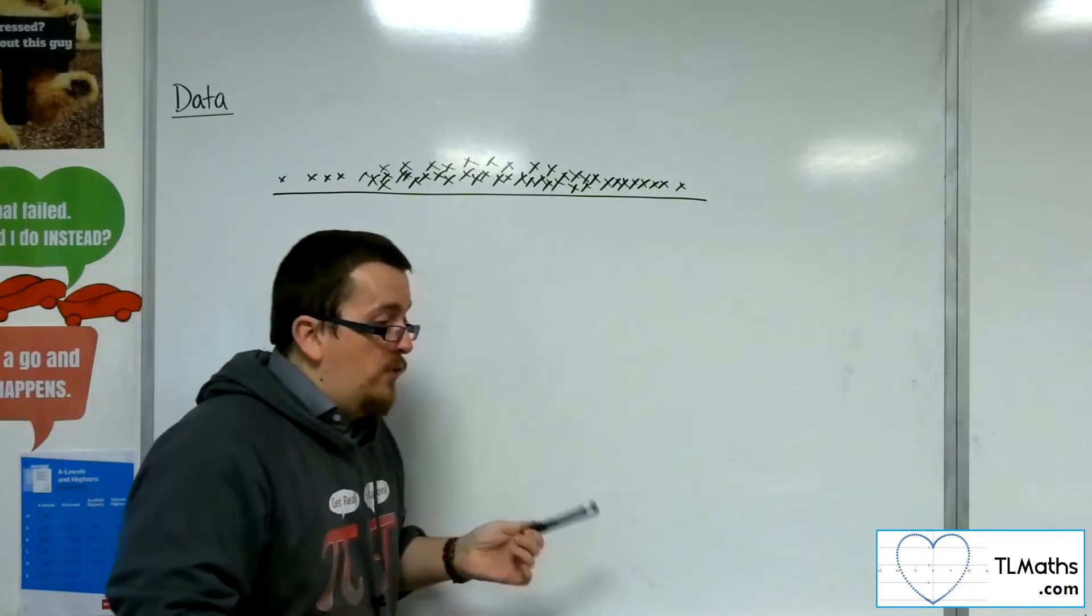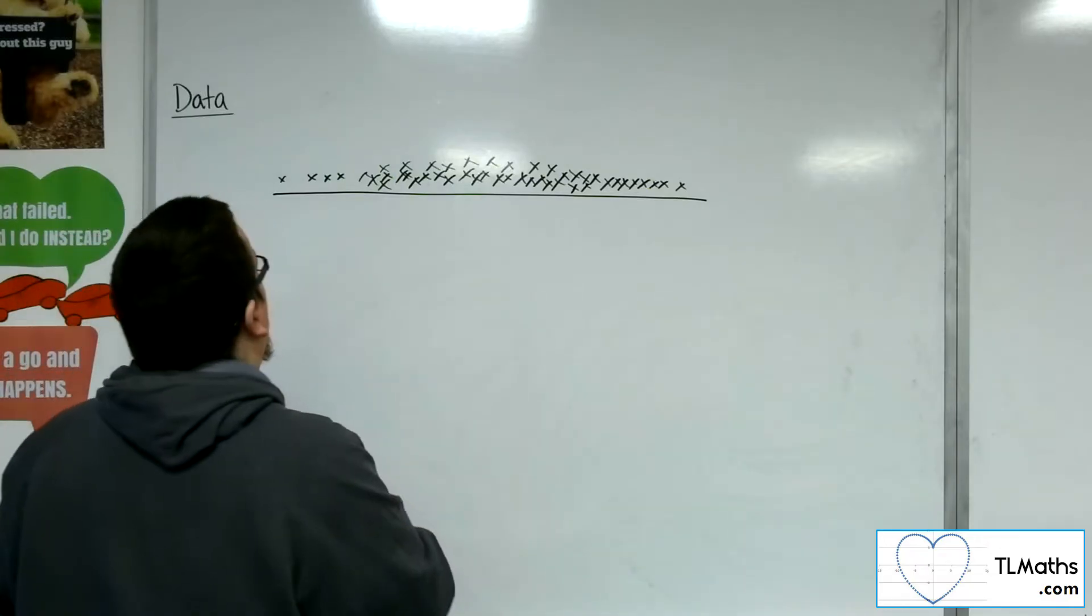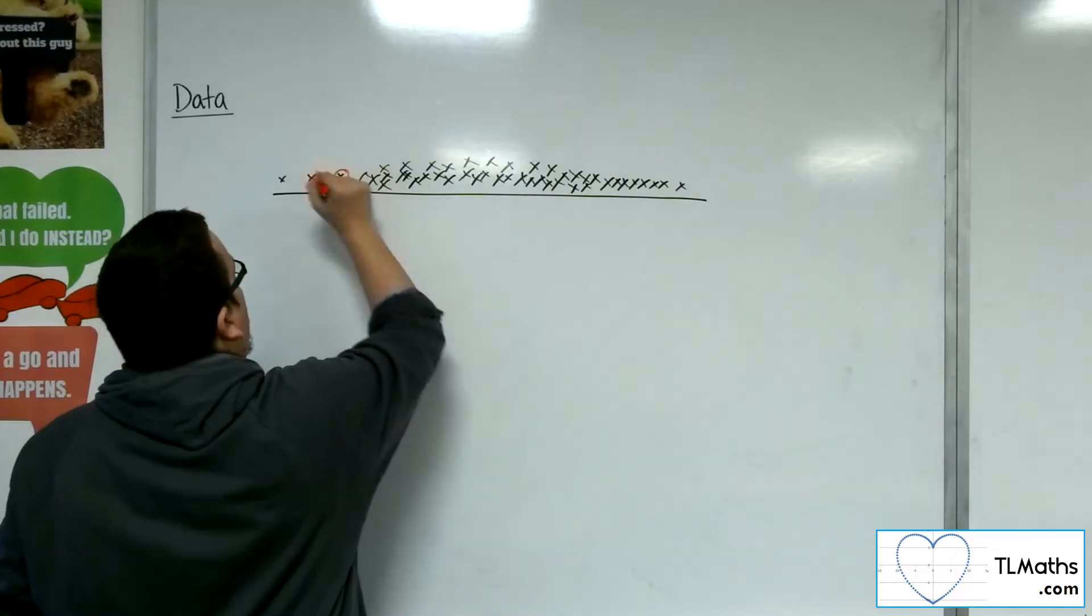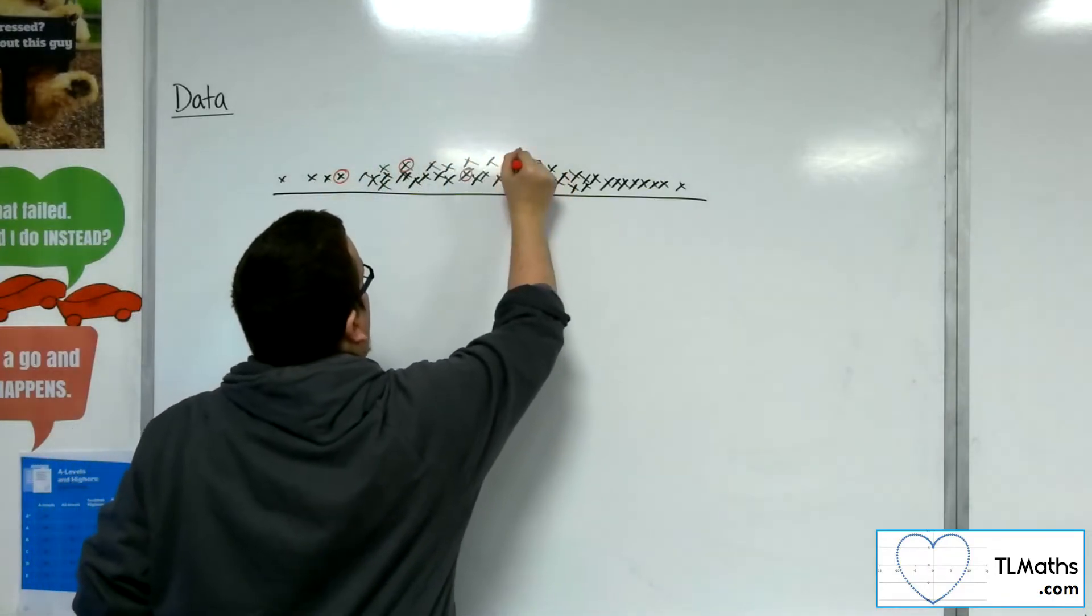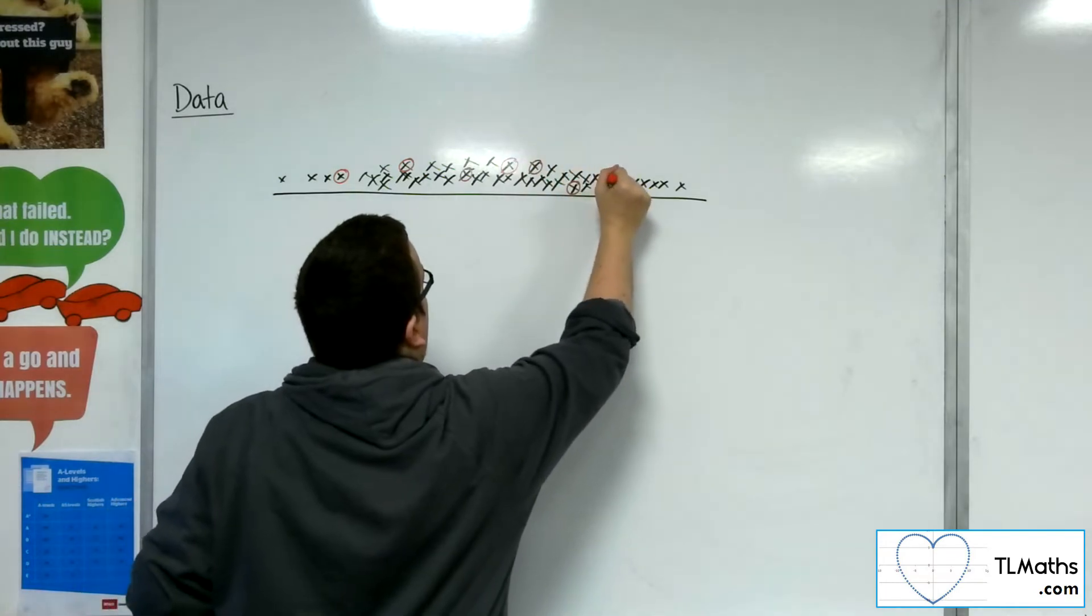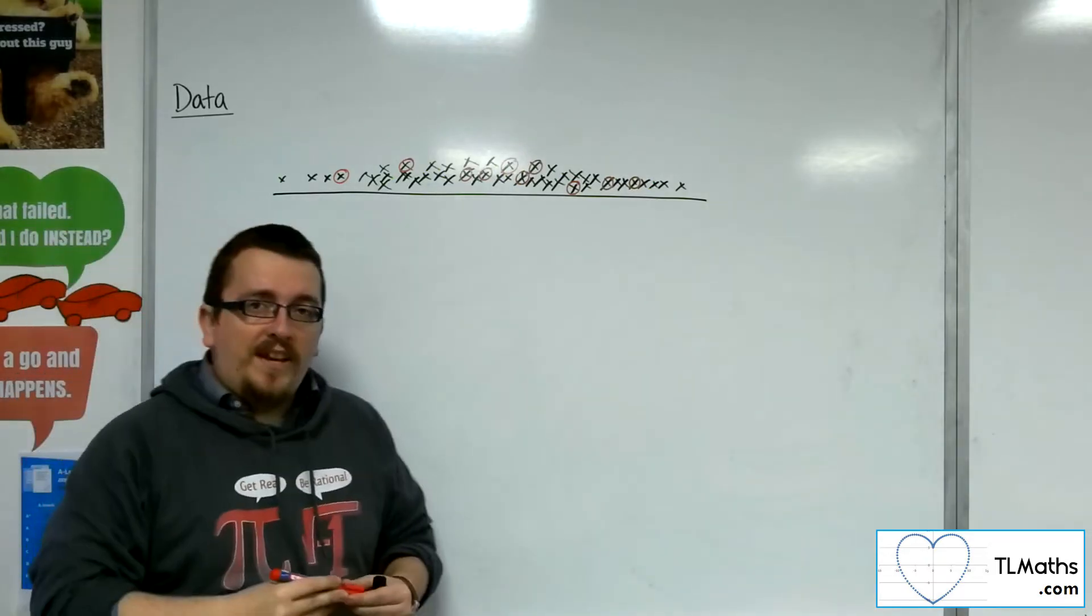So what you would do is you would instead take a sample. So you would pick, let's say, well, you'd pick these randomly. These would be picked randomly, and there's my sample of the data.